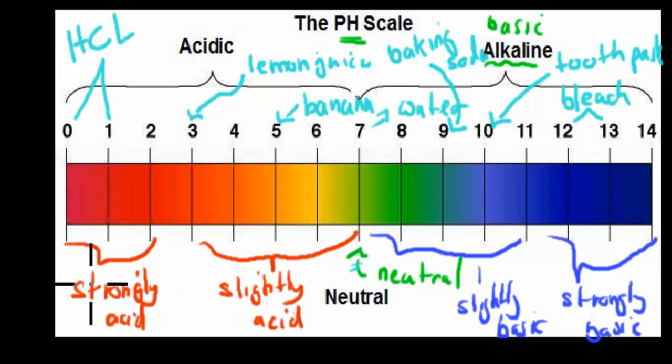Anything below it is acidic. The closer it is to 0, the more acidic it is. Whereas the closer it is to 14, the more basic it is. Now in this case, because we're talking biology, I want to make sure that you understand what the pH scale has to do in terms of biology.